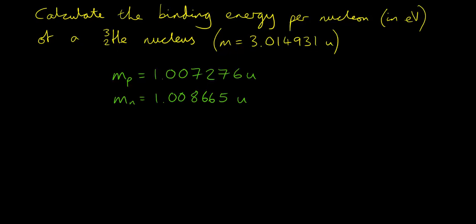Helium-3 is made of two protons and one neutron. So the mass of the separated nucleons is 2 times 1.007276 plus 1.008665, which gives us a combined mass of 3.023217U.